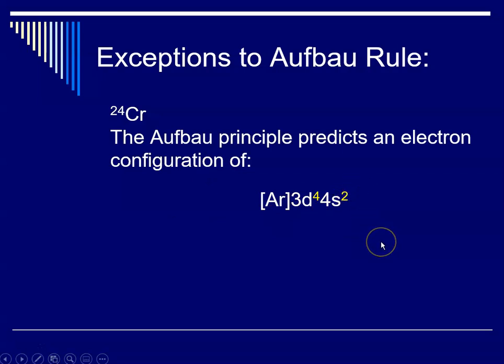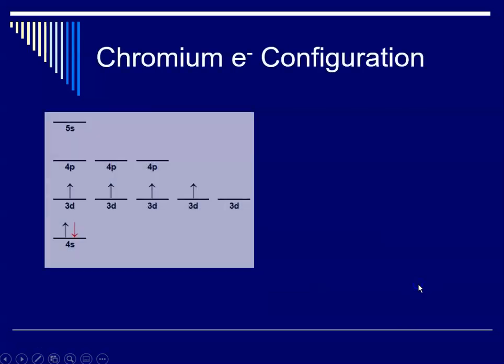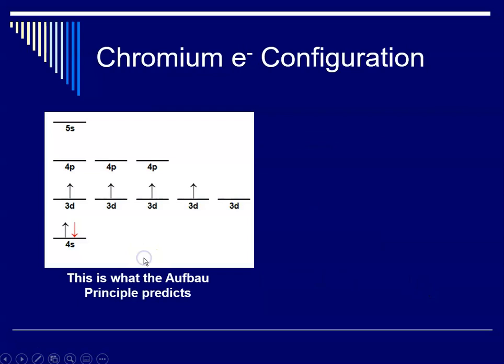The Aufbau principle would predict an electron configuration of [Ar] 3d⁴ 4s². So what we would expect here is that the S sublevel fills, and then the d's would start filling in, and there would only be four d electrons. Experimentally though, what we actually find is 3d⁵ and 4s¹. So let me show you what that looks like.